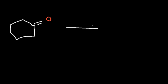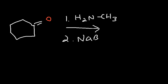Let's work on a practice problem. We have cyclohexanone, and in the first step we add methylamine, and in the second step sodium cyanoborohydride. Predict the major product as well as the intermediate of this reaction.